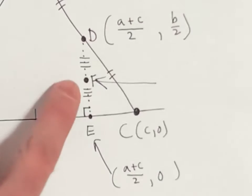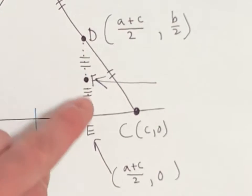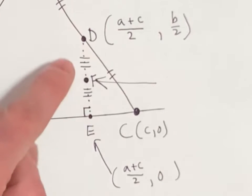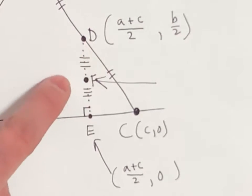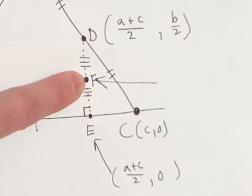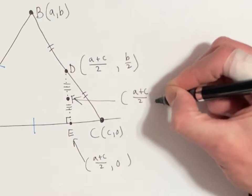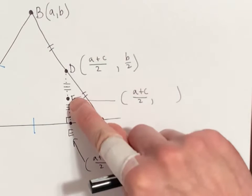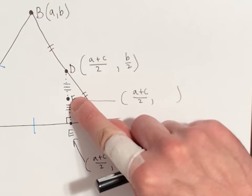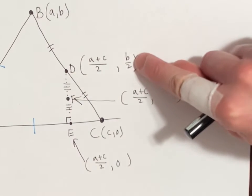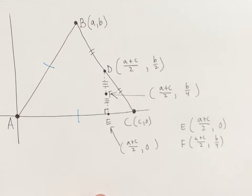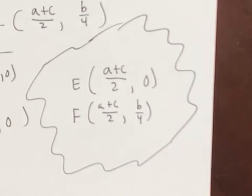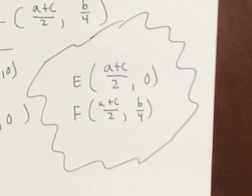Now for point F. Point F is directly between E and D, exactly halfway to the top of D. So this point's y coordinate is half the y coordinate of D. It has the same x but half the y coordinate of D. So half of B over 2 would be B over 4. For part A, there are the coordinates of points E and F.